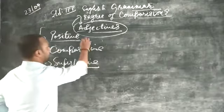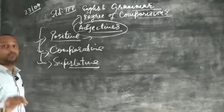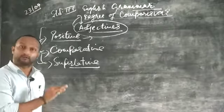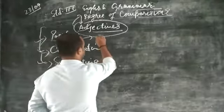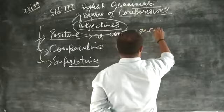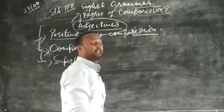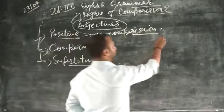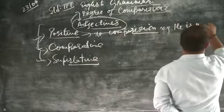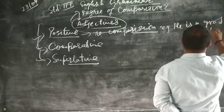First category is positive. Positive degree is the original form of adjective. That means no comparison is there.